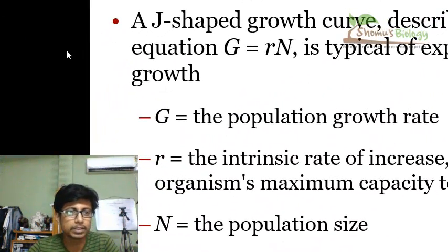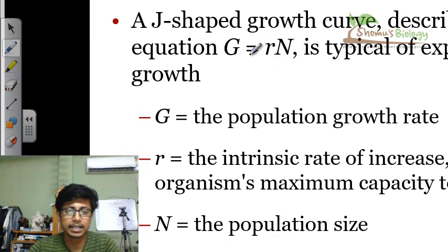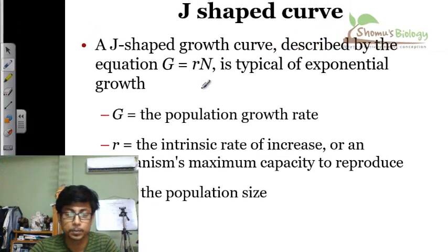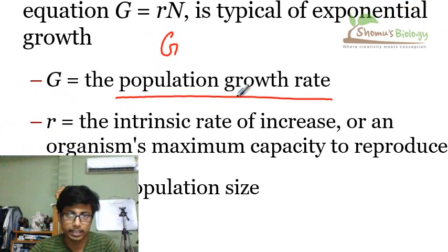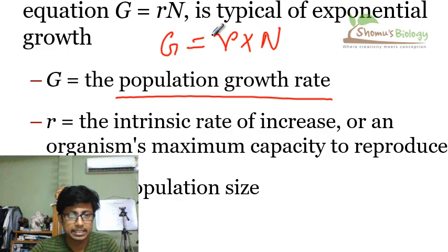Now let us return here. A J-shaped growth curve is telling us about the fact that the population is emerging and dividing and rising very, very fast. So the exponential growth or the rate of exponential growth, which is denoted with capital G, is known as the population growth rate. Capital G equals small r multiplied with capital N. Here small r is the intrinsic rate of increase for an organism.